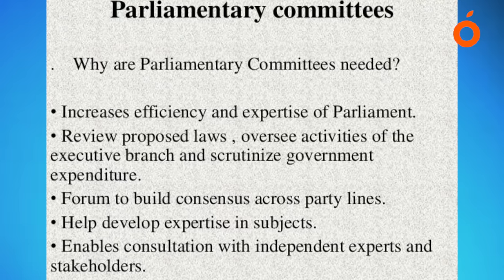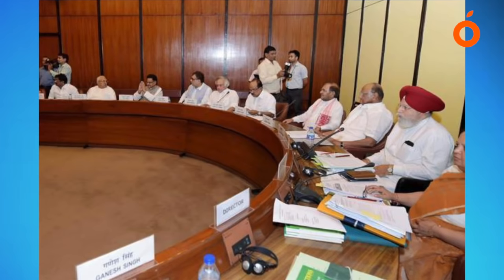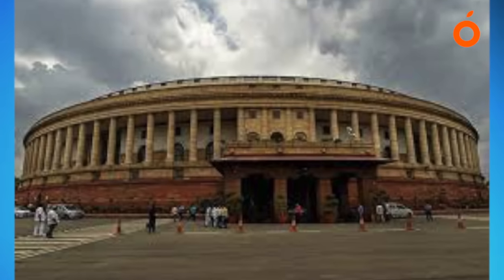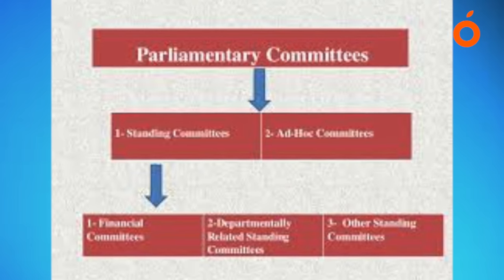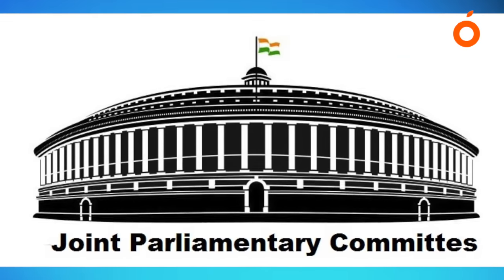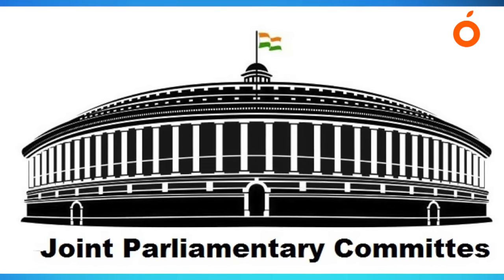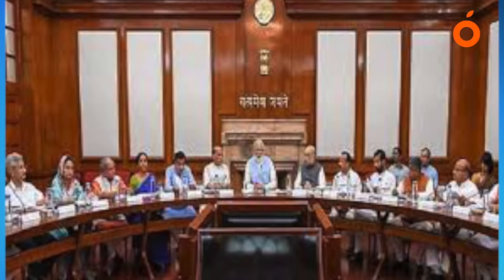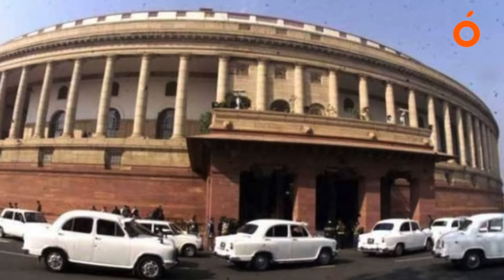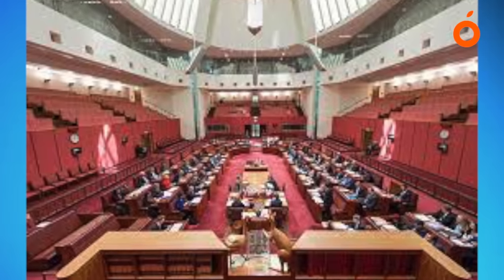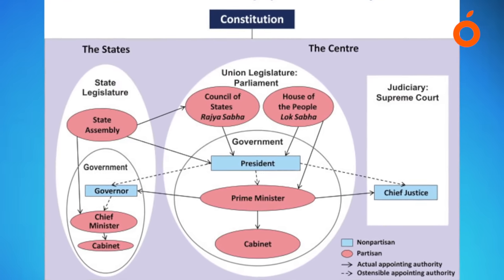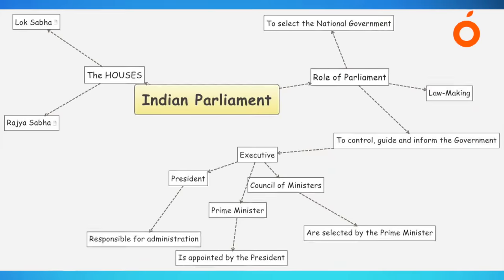The Committee on Welfare of Scheduled Castes and Scheduled Tribes reviews the report on action taken by the Union Government on the measures proposed by the committee, examines the representation of SCs and STs in services under the Union to ensure implementation of Article 335, reviews the working of welfare programmes for SCs and STs in Union territories, and considers any other matter referred to it by the Speaker. The committee consists of not more than 30 members — 20 elected by Lok Sabha by proportional representation by single transferable vote, and 10 members nominated by Rajya Sabha are co-opted.